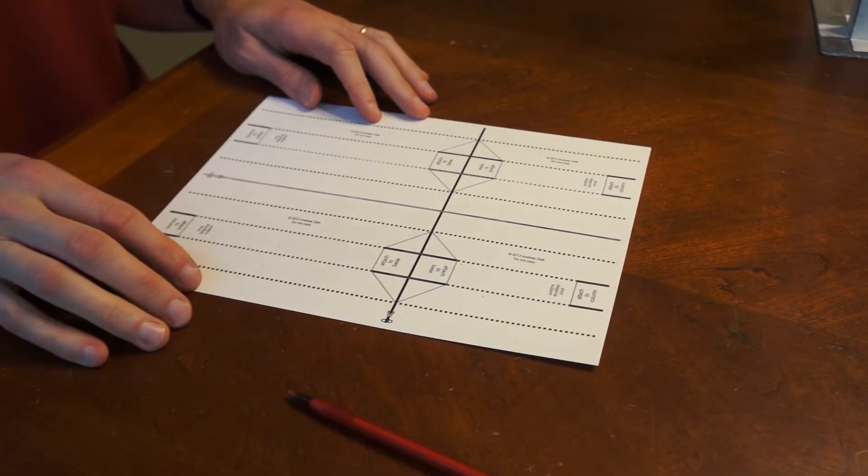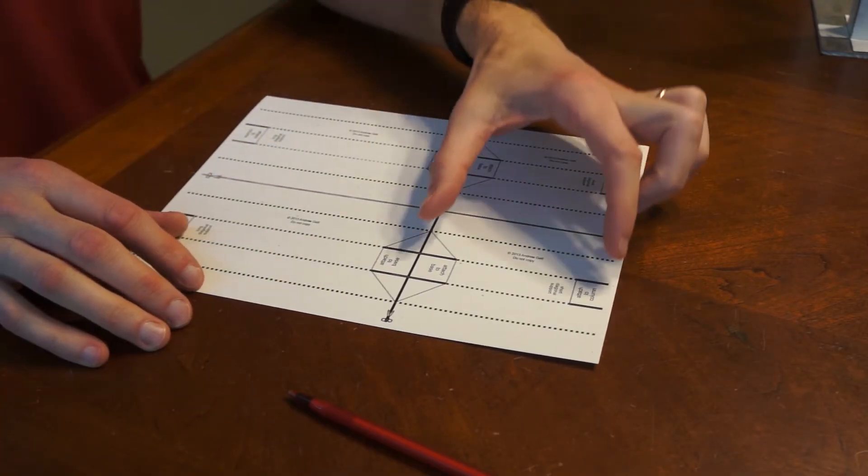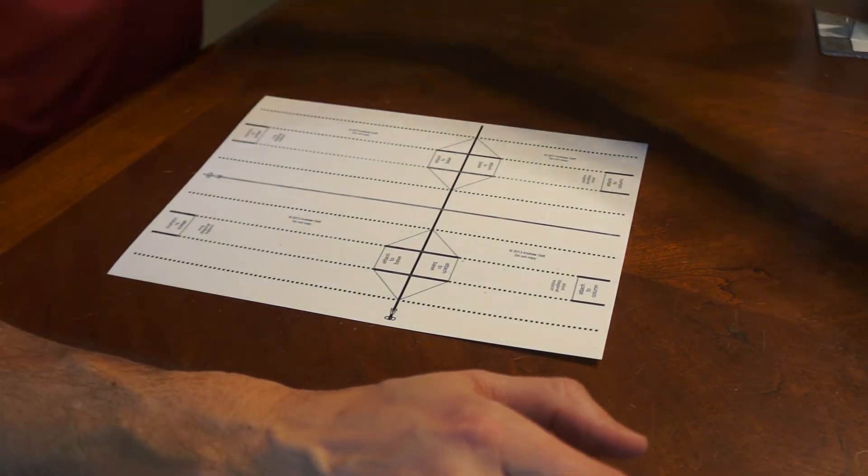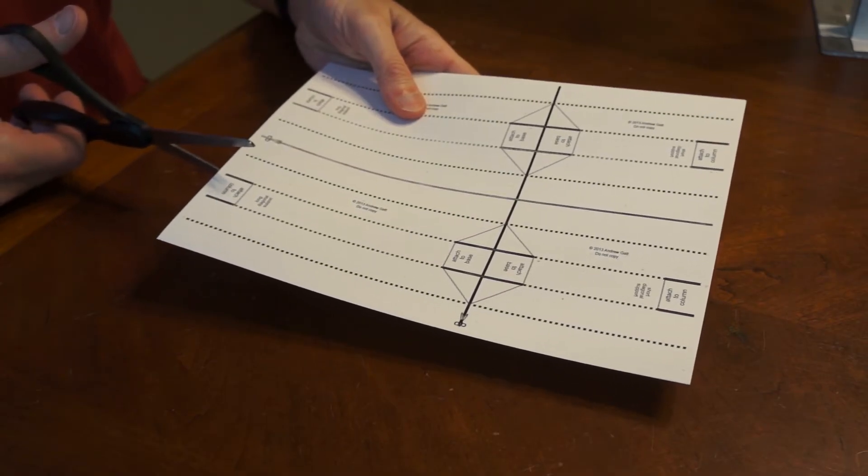Here I have the templates for diagonal supports. This is enough to make two short diagonal supports and two long diagonal supports, for a total of four. I'm going to start with a long diagonal support.